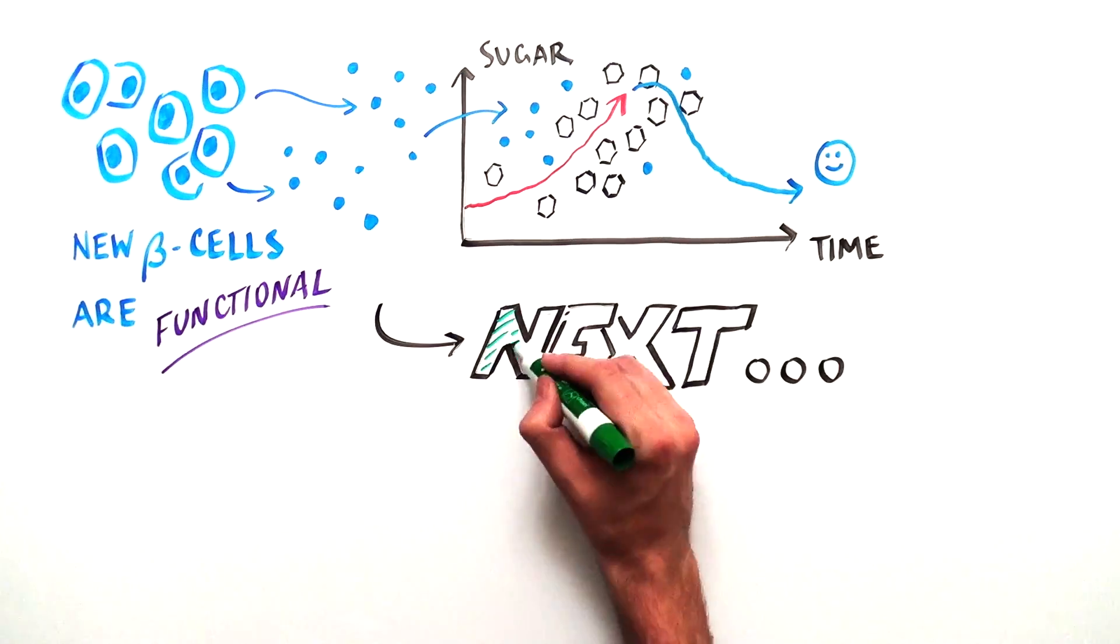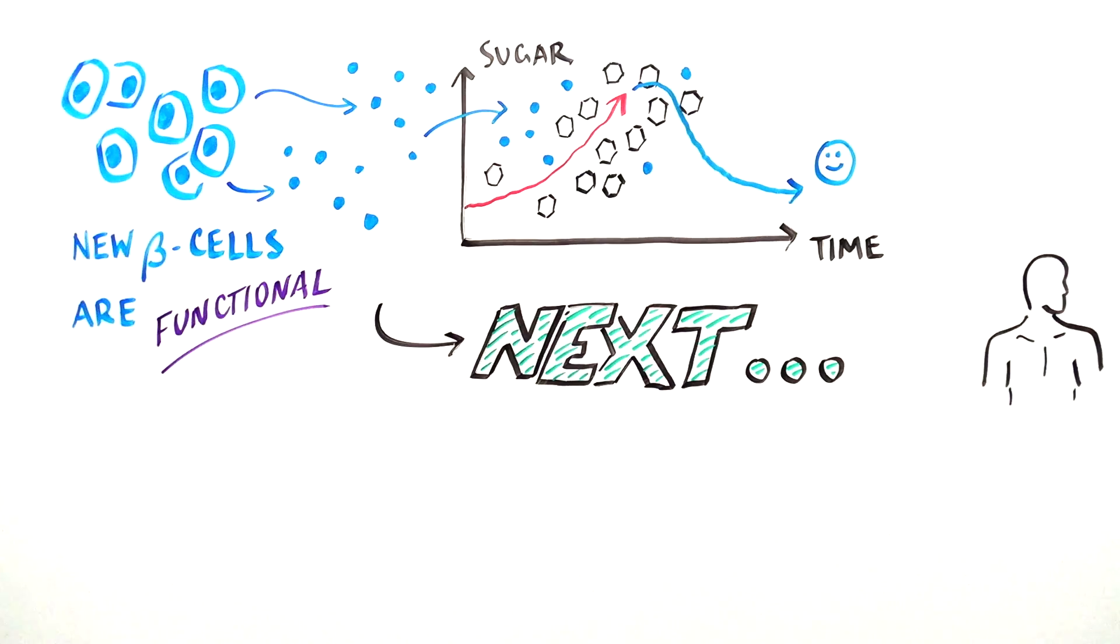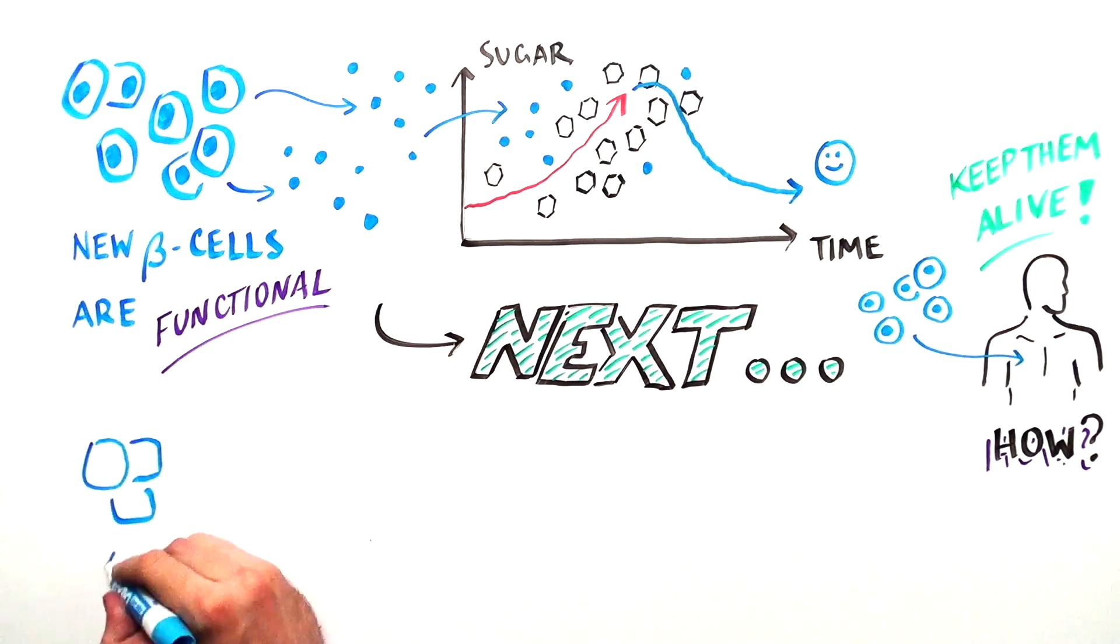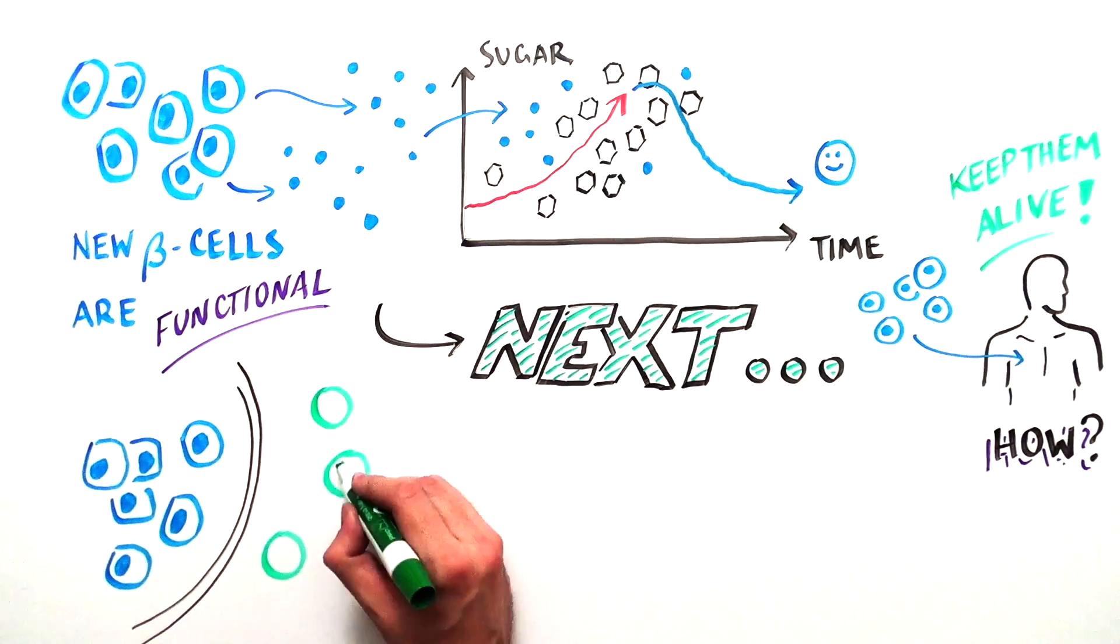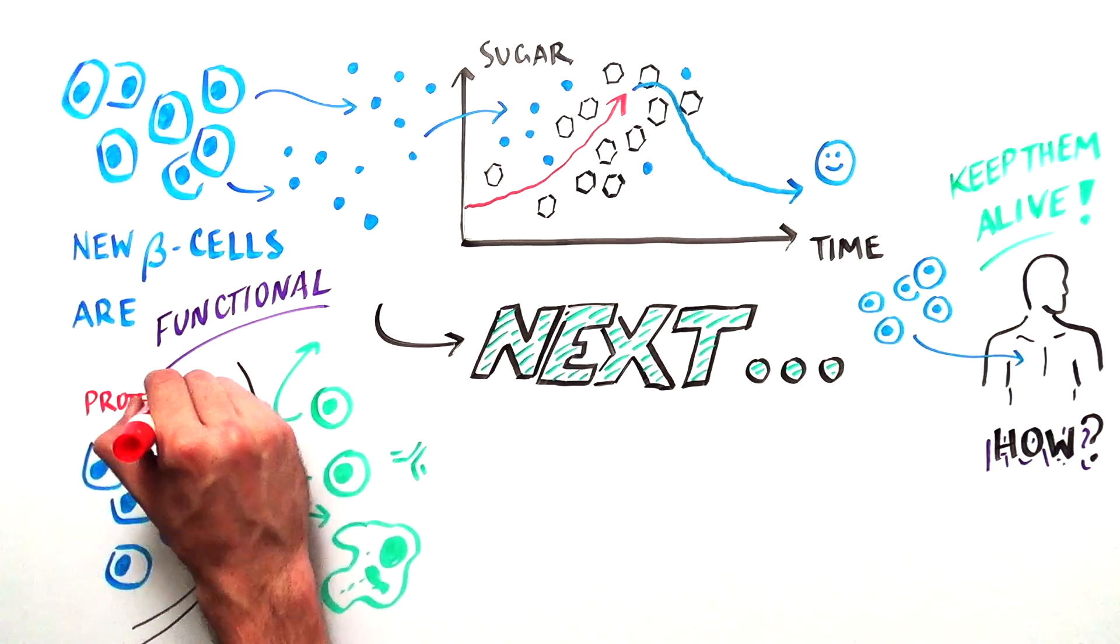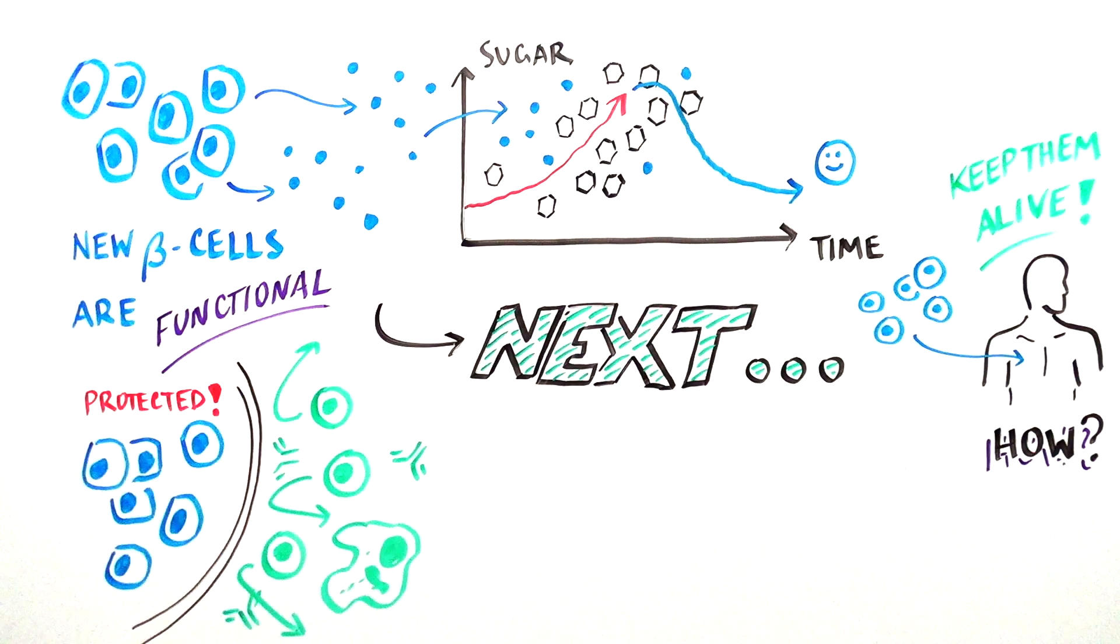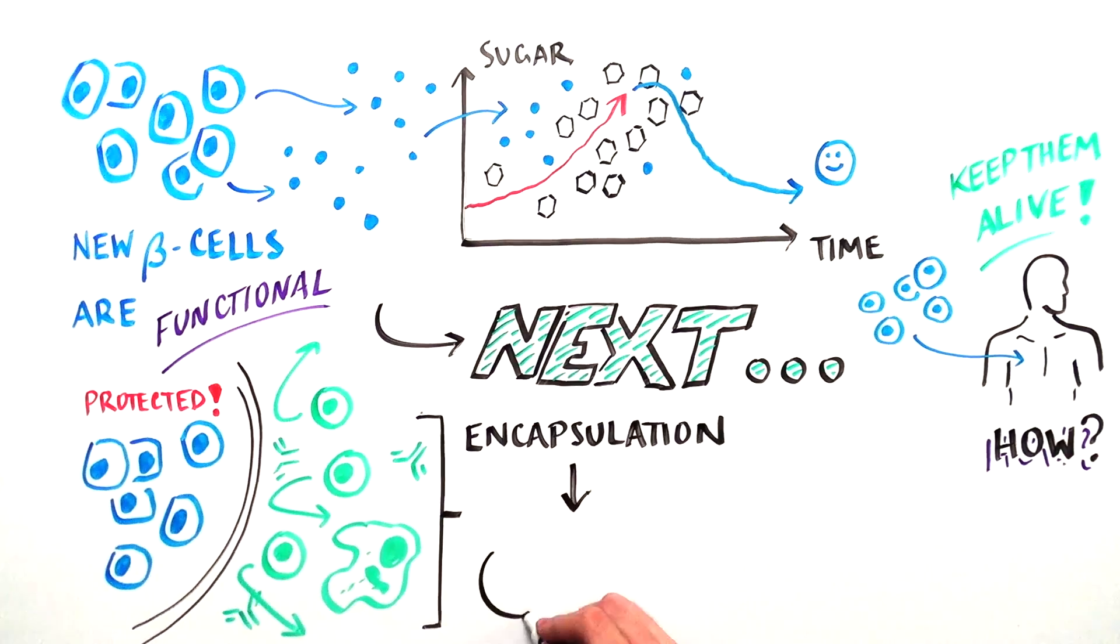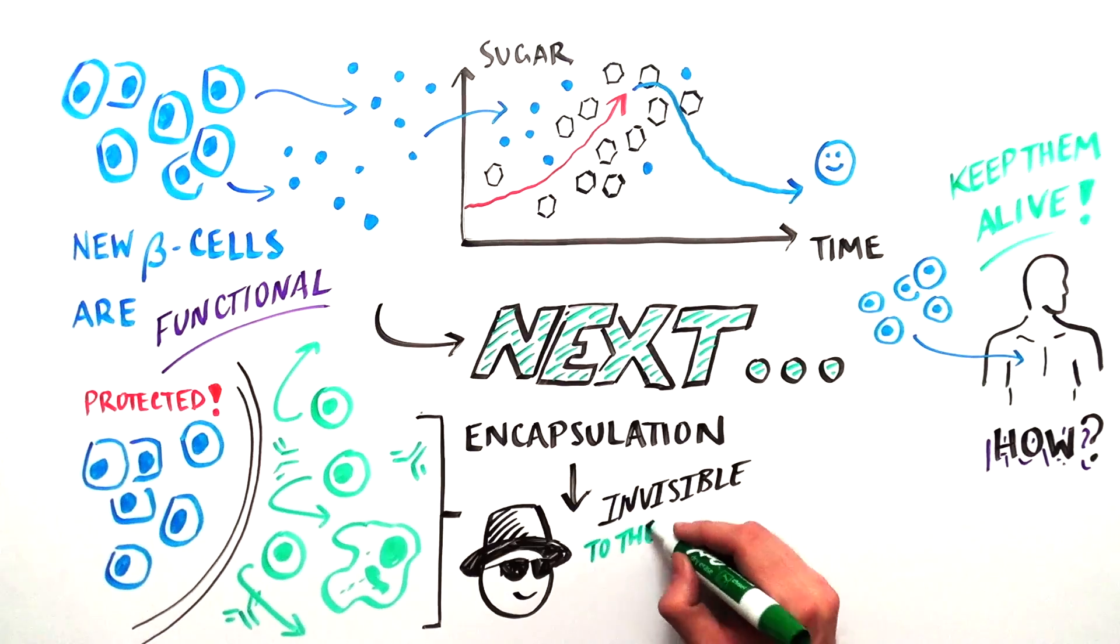Scientists are now solving a new challenge. How do we introduce these cells into the body and keep them alive? One challenge is to protect them from the immune system, which is responsible for killing beta cells in type 1 diabetes. One possible solution is to use encapsulation or modify the surface of the cells to make them invisible to the immune system.